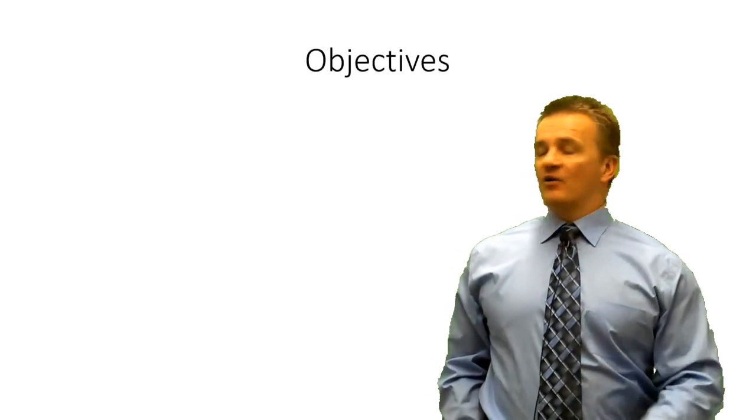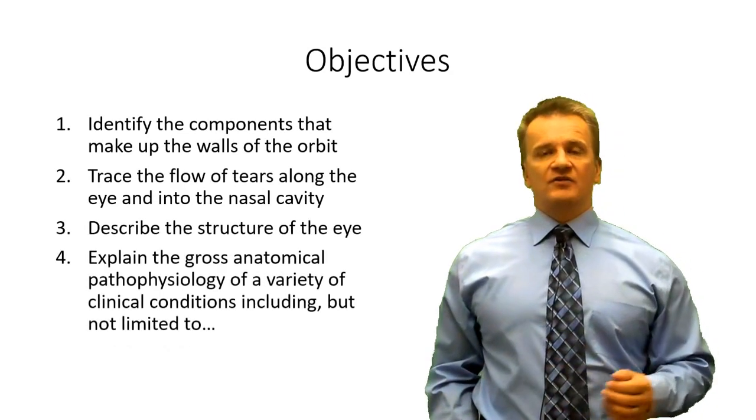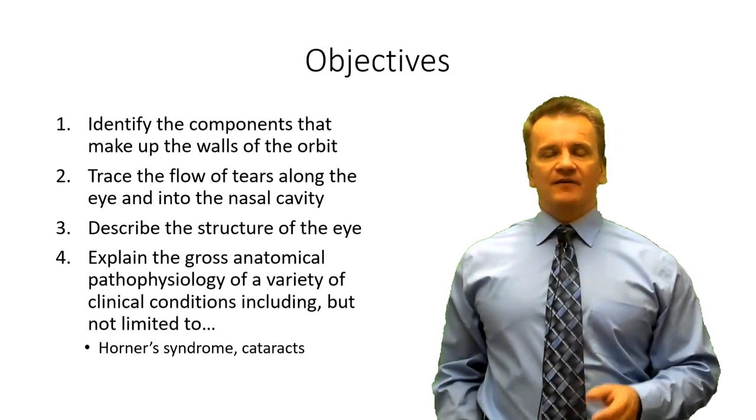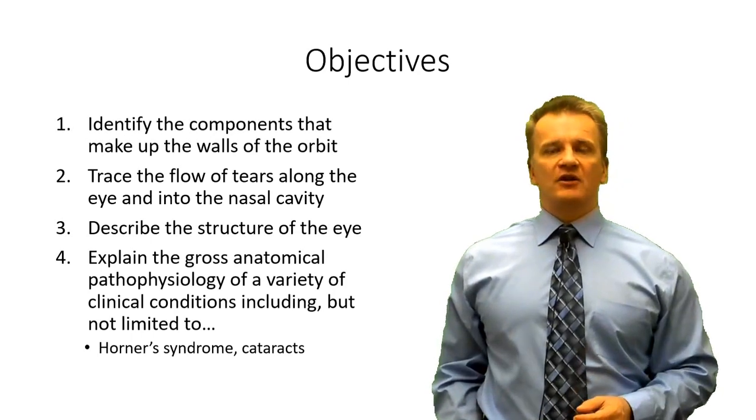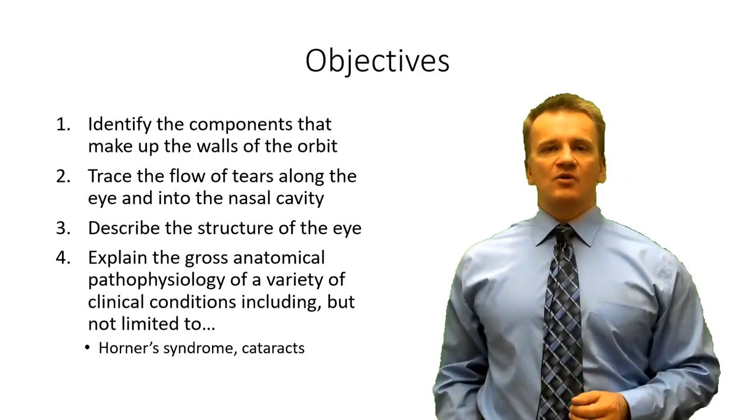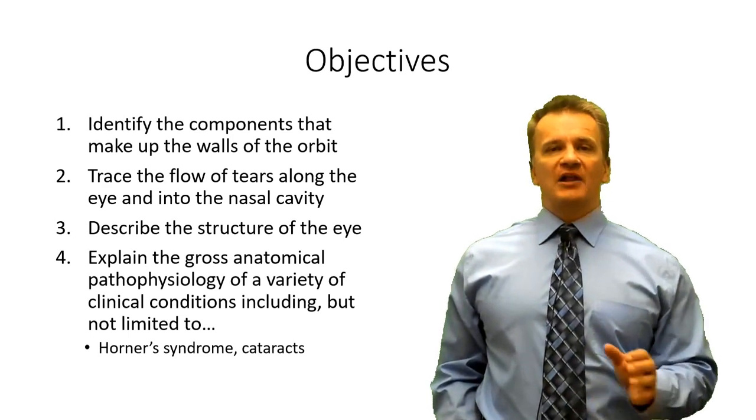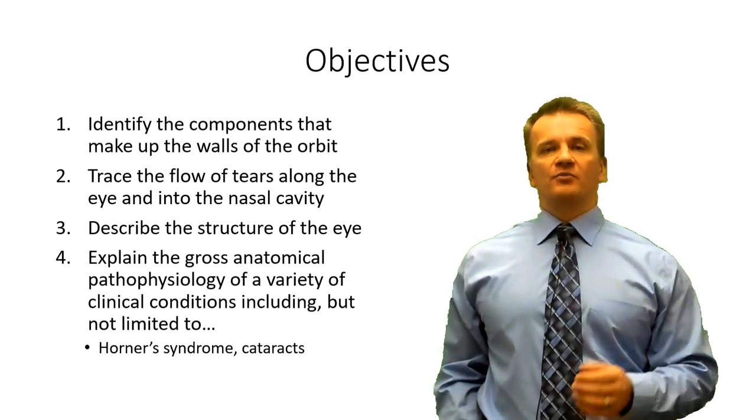Good day and welcome to today's discussion of the human eye and orbit. The eye itself is a complex organ which is critical to our ability to take in and process our external environment. Just as complex is the collection of muscles responsible for precision movement of the eye into a multitude of positions. In this first segment of our discussion, we'll focus on the eye itself and its supporting structures, including the bones that make up the orbit.